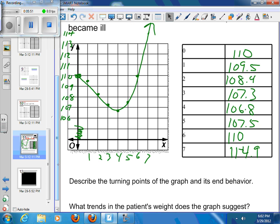So examining this, describe the turning points of the graph and its end behavior. So the ending behavior means after we get better, we would continue to put on weight or probably would stabilize our weight and not just get fatter and fatter. What trends in the patient's weight does the graph suggest?